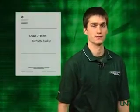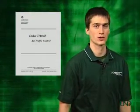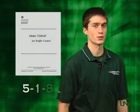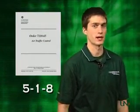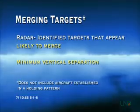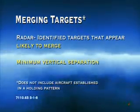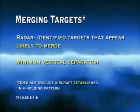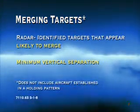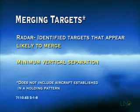Let's take a look at what the phrase merging targets means. This information can be found in the 7110.65 in paragraph 5-1-8. These rules do not apply to aircraft established in a holding pattern. Merging targets are defined as radar-identified targets that appear likely to merge and are at the minimum vertical separation. Essentially, merging targets are aircraft that will pass over or under each other and are separated by the minimum required altitude.